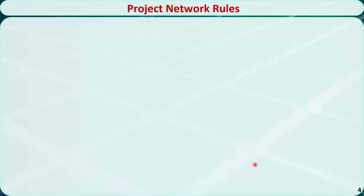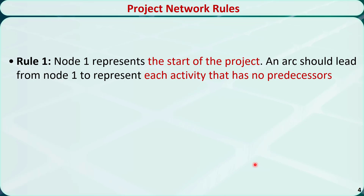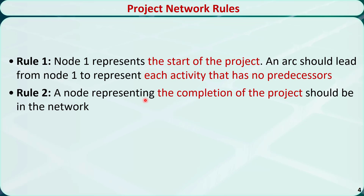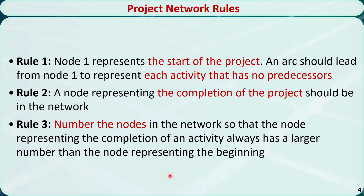There are some rules we need to follow when building project networks. Rule 1: always use node 1 to represent the start of the project. If an activity has no predecessors, it should begin with node 1. Rule 2: we should always use a node to represent the completion of the project in the network. Rule 3: we need to number the nodes so that the node representing the completion of an activity always has a larger number than the node representing the beginning of the activity.